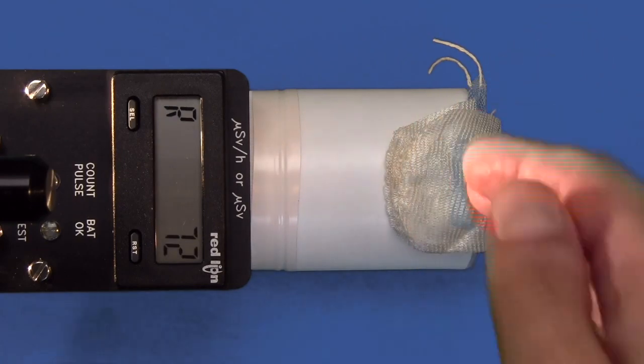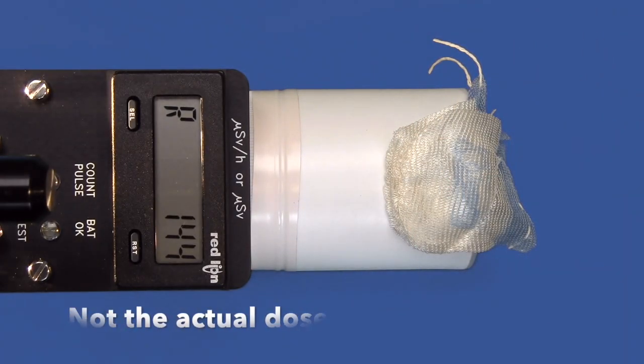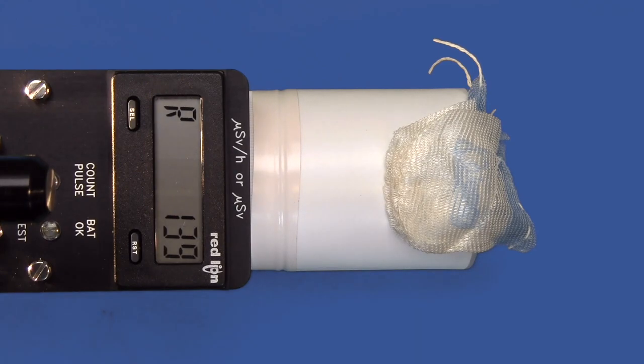This reading represents alpha and beta emission. It does not quantify the actual dose. The range on the survey meter isn't low enough to pick up background gamma radiation, so we know it's mostly alpha and beta.